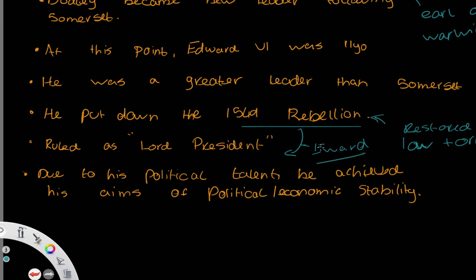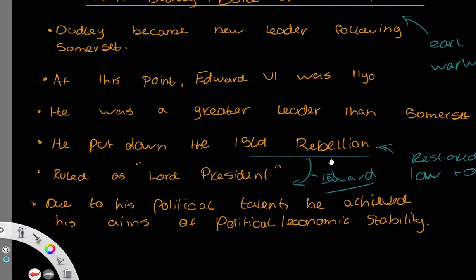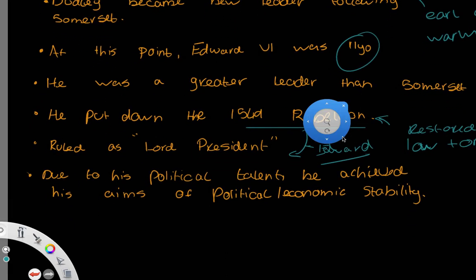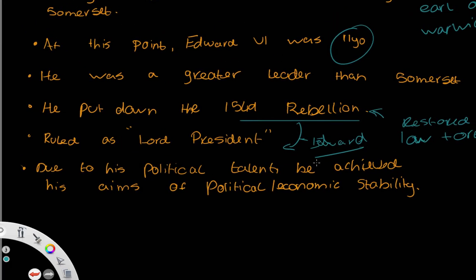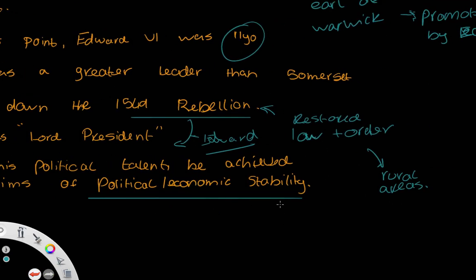Northumberland was a talented politician, and due to this talent he was able to secure political and economic stability — again, this is relative. We're going to talk about it in more detail in another video. This stability is relative to the period of Edward and Mary's reign, which was seen as the mid-Tudor crisis — a time when nothing was really stable.